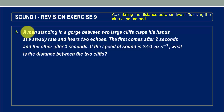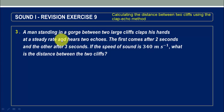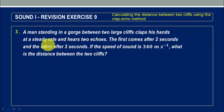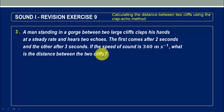In this question, we are told that a man standing in a gorge between two large cliffs claps his hands at a steady rate and hears two echoes. The first comes after two seconds and the other after three seconds. If the speed of sound is 340 meters per second, what is the distance between the two cliffs?